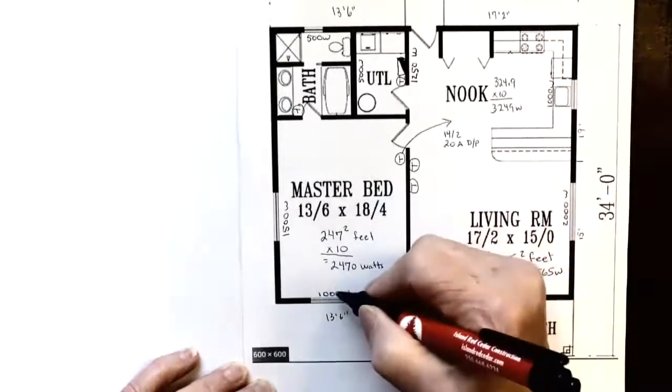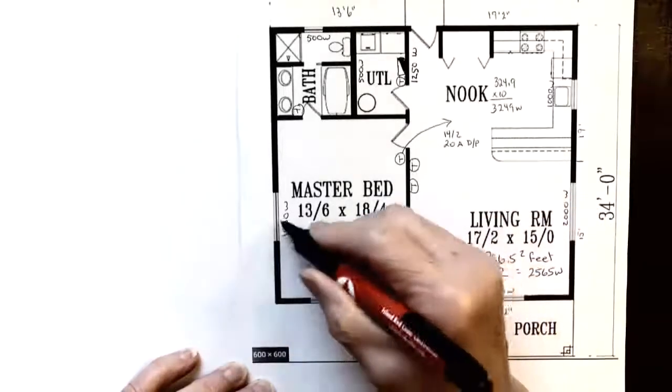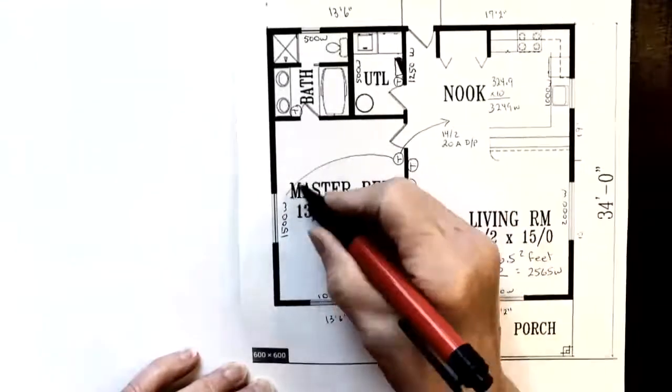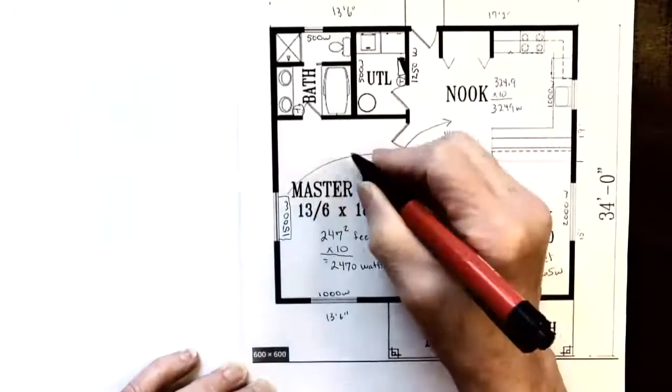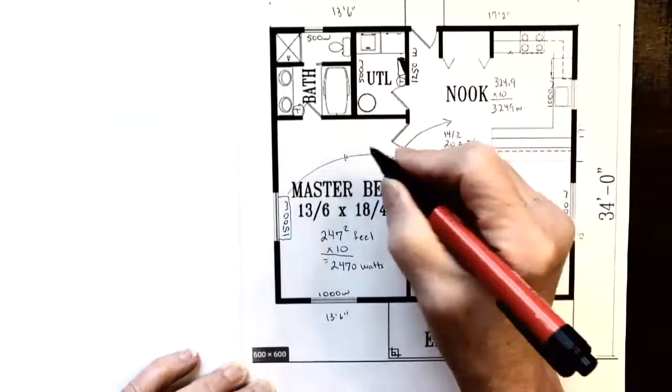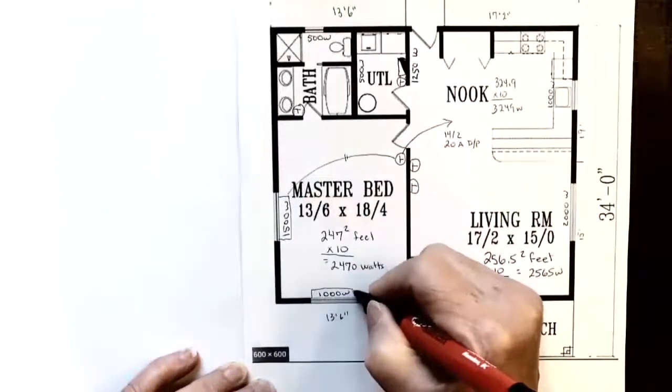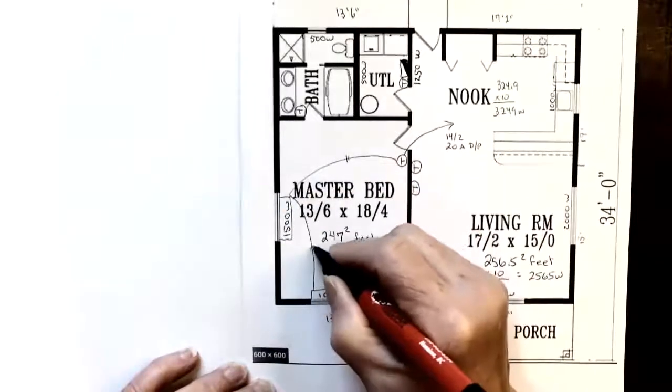I can take a 14-2 to each of them, or I can take a 14-2 out to this one and then continue on to that one. Maybe I'll do that for this. So there's my baseboard heater. I'm just taking a 14-2 over to there, and then from there we will go to my second baseboard heater with another 14-2.